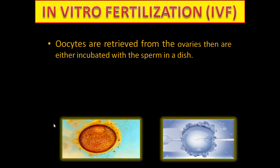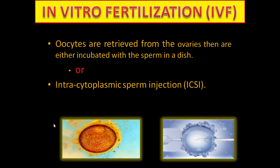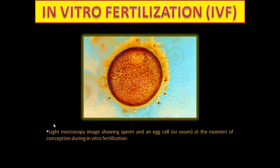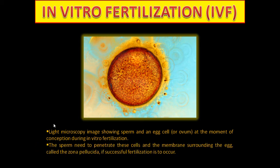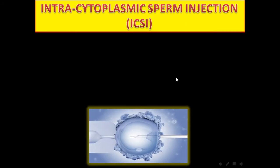In vitro fertilization: oocytes are retrieved from the ovaries and are either incubated with sperm in a dish or subjected to intracytoplasmic sperm injection. This light microscopy image shows a sperm and egg at the moment of conception. During IVF the sperm needs to penetrate the cells and the membrane surrounding the egg — this is the sperm trying to penetrate the zona pellucida surrounding the ovum.